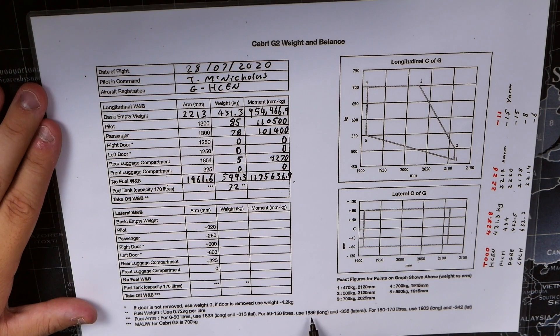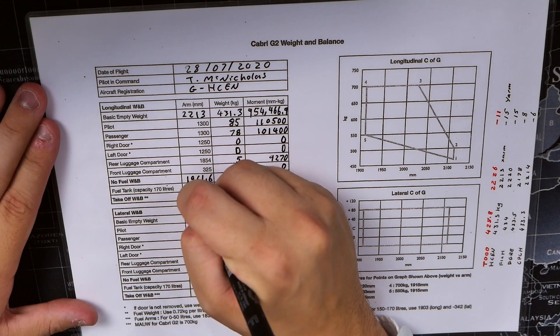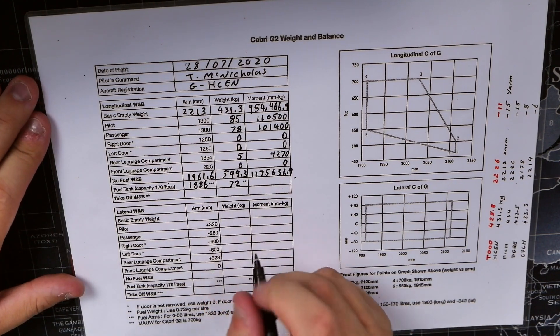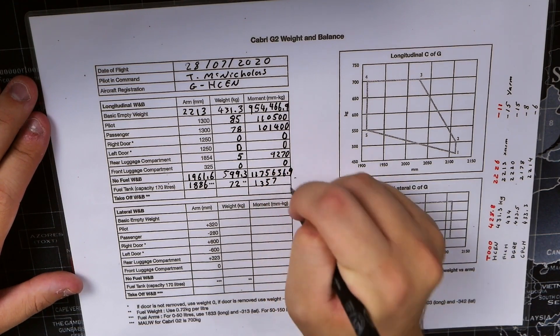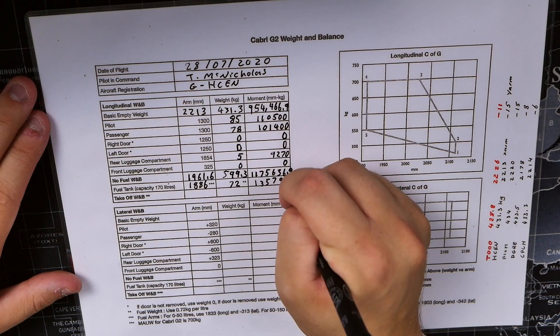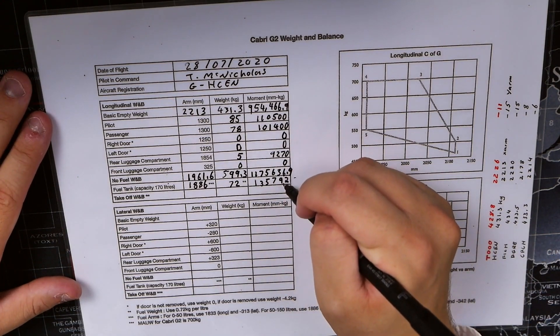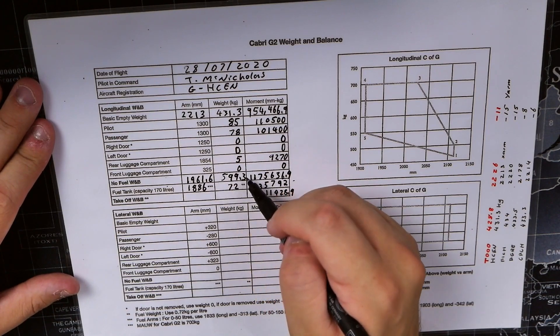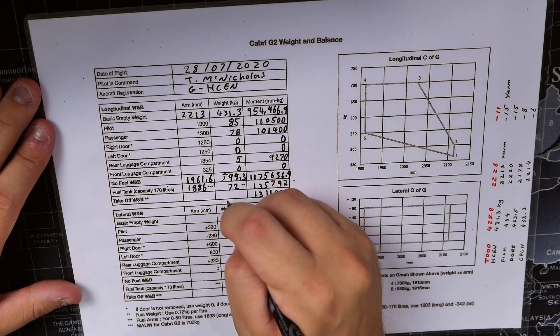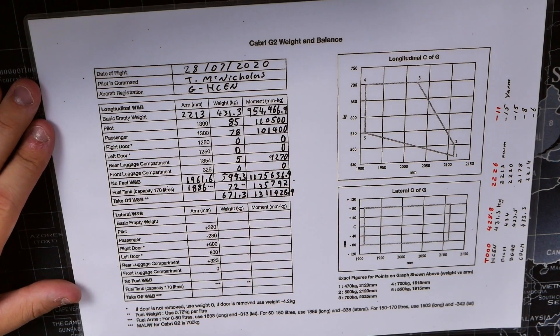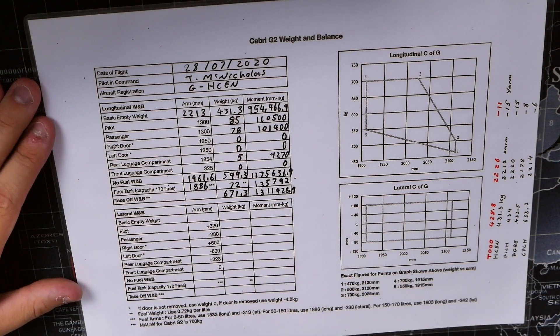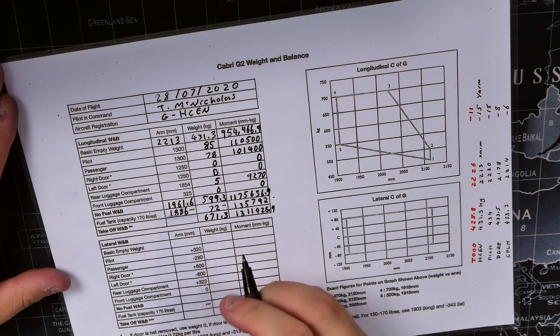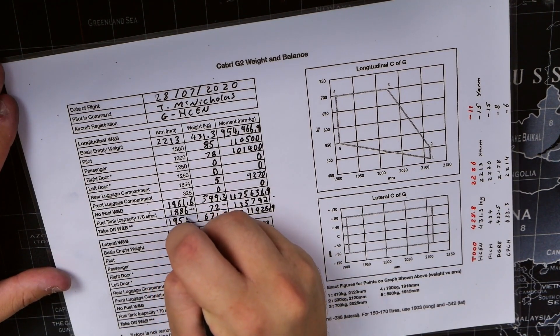Down at the bottom it says that if your fuel is between 50 or 150 liters, we need to use longitudinal arm 1886. So we put 1886 in this box, and we times these two together to give us the moment of 135792. We add these weights together to get our takeoff weight of 671.3 kilograms in total. Dividing that number by this number, we get the longitudinal arm of the aircraft fully loaded with fuel at 1953.6.